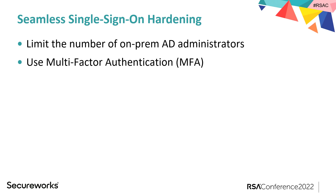How to harden seamless SSO: treat the domain controller as tier-zero — this is just a password on the domain controller. Limit the number of on-prem admins who can perform DCSync. And again, use multi-factor authentication — if you are compromised and someone gets those Kerberos tickets offline, with MFA they are not able to log in.